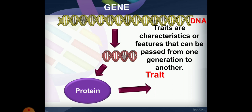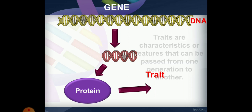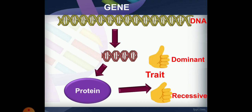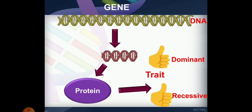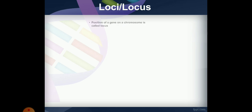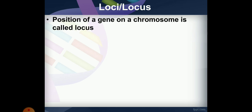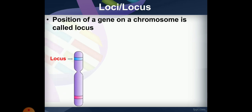Traits are characteristics and features that can be passed from one generation to another. For example, a curved thumb can be a recessive or dominant character. The position of a gene on a chromosome is called its locus.